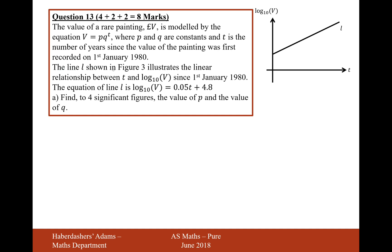The line L shown in figure 3 illustrates the linear relationship between T and log base 10 of V since the 1st of January 1980. The equation of the line is log10(V) equals 0.05T plus 4.8. Find to four significant figures the value of P and the value of Q.